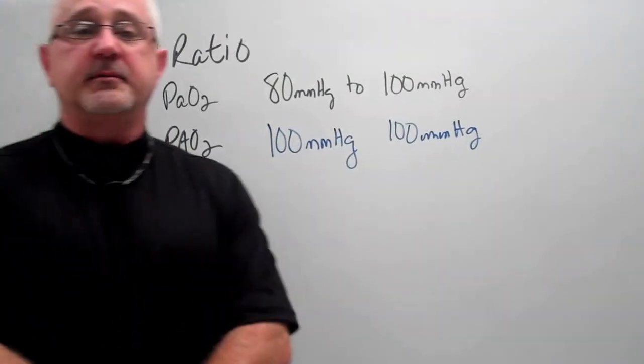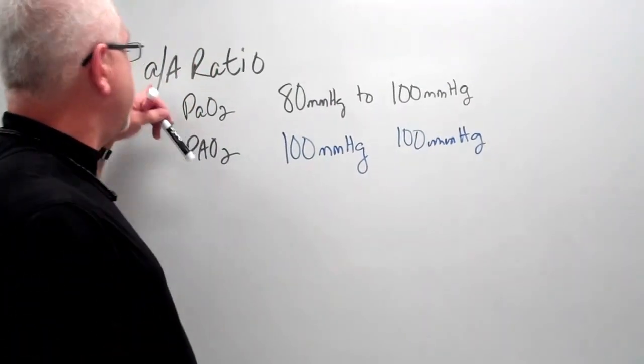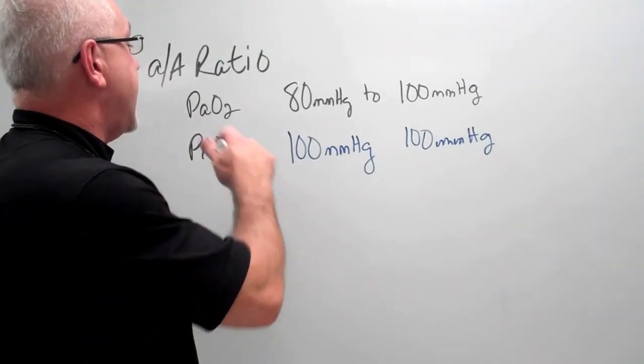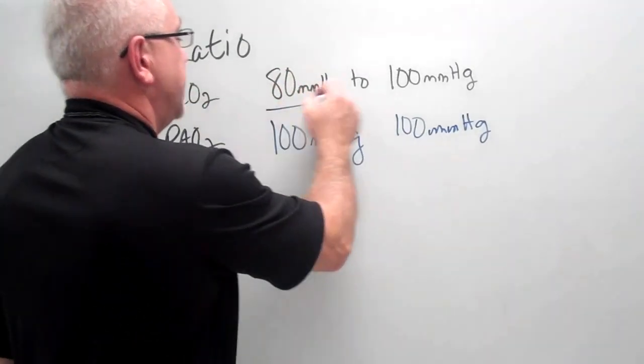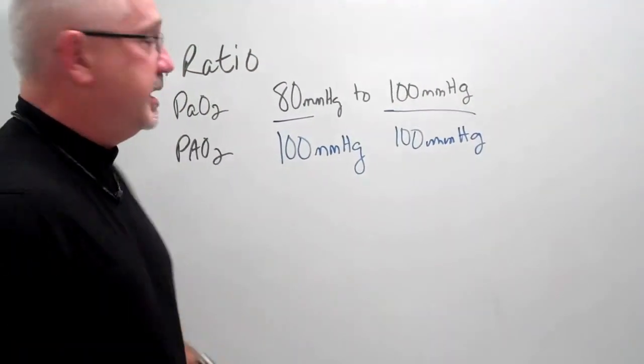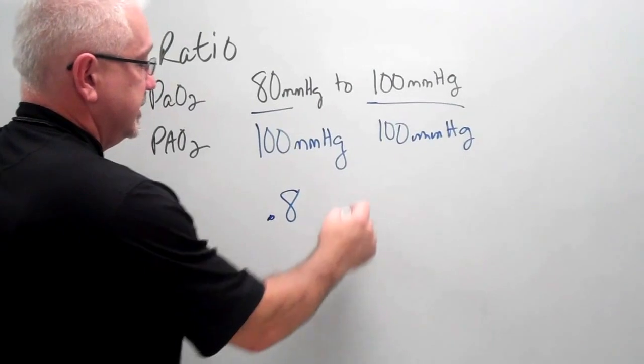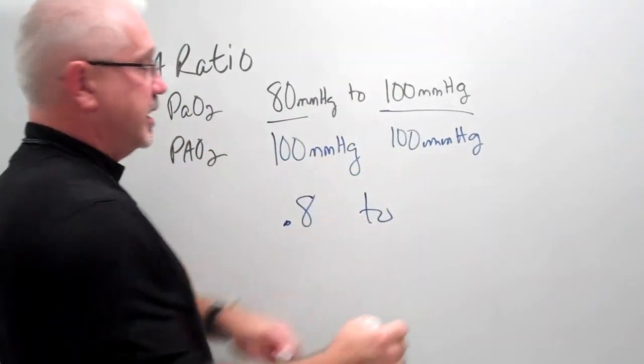Well, our formula is stating that the A-A ratio is dividing the P little a O2 into the big A O2, and so what we do is 80 over 100 would give us 0.8 to 100 over 100 is 100%, or 80 to 100%.